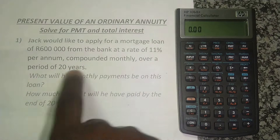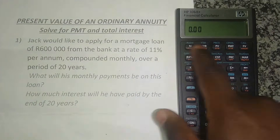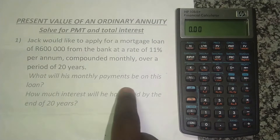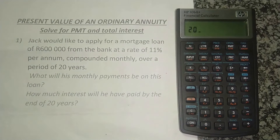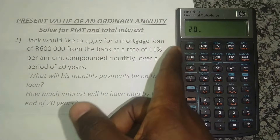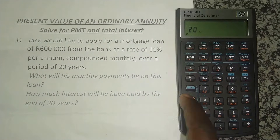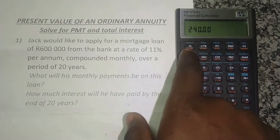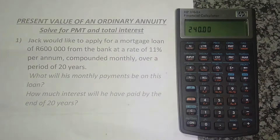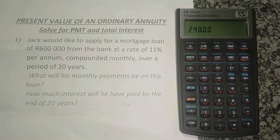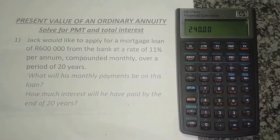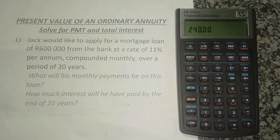We can start our calculation. We know it's for 20 years, so we're putting in the time value of money elements to answer the first question. I put in 20 for the years, but since he's paying monthly and it's compounded monthly, I press the orange button and then N. Under N, it's written 'payments per year' — it multiplies the number of years by the number of compoundings per year. So pressing 20, then orange, then N gives us 240 months — 20 years is 240 months.